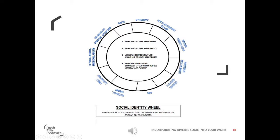Gender identity: folks use words like man, woman, non-binary, transgender, cisgender. Religious or spiritual affiliation: words like Muslim, Christian, Hindu. When you're done thinking about what words you use to name these identities, think about which identities you are most aware of on a day-to-day basis — and which identities you think about least or are least aware of.